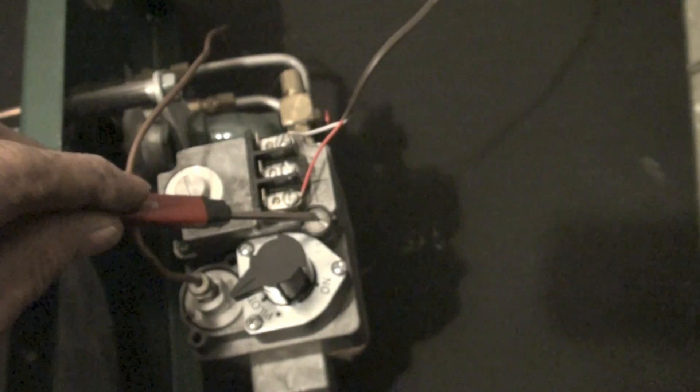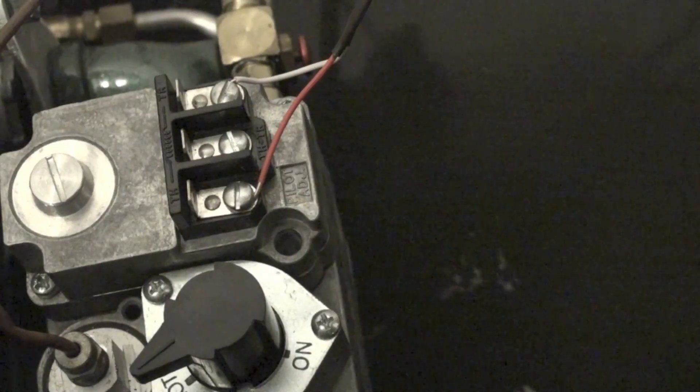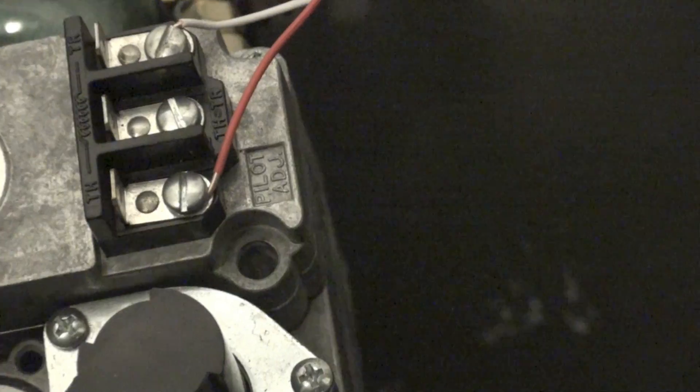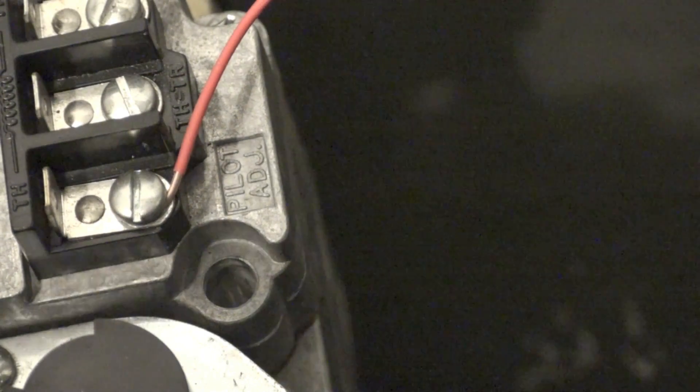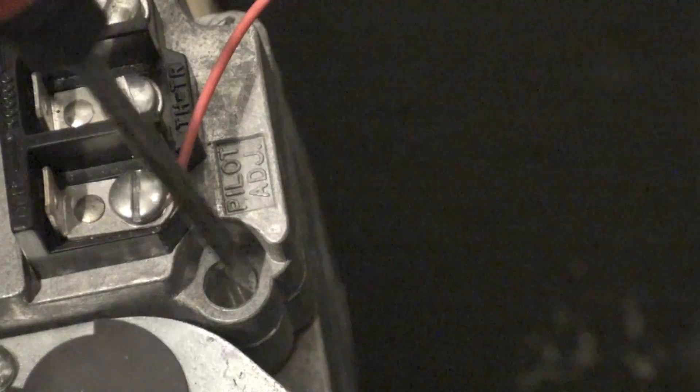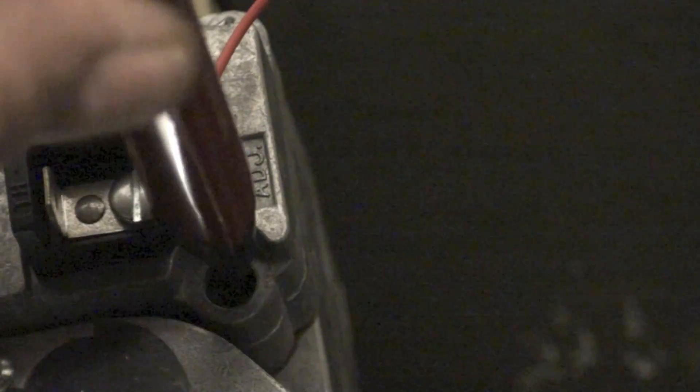Okay, here's a pilot adjust screw. That's just a cap. I'm going to take it off. Okay, now we can see the pilot adjust. Notice it's noted right beside it that's pilot adjust. And it takes a very small screwdriver, a little thermostat screwdriver. And there's a little slot head down there. And you can move it back and forth.